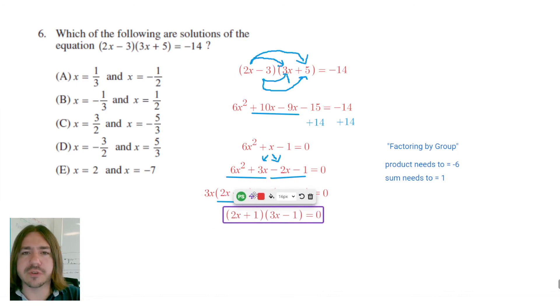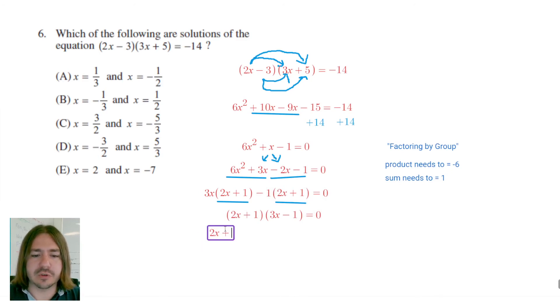And now we've got a product of factors that equals 0, so we can actually use the 0 product property. And so what the 0 product property says is that if you've got two factors whose product is 0, at least one of the factors has to be 0. So it allows us to split this up and set each individual factor equal to 0, 2x plus 1 equals 0, and 3x minus 1 equals 0, and then we can solve these individually.